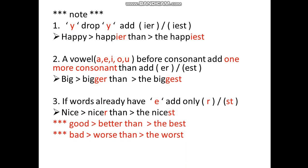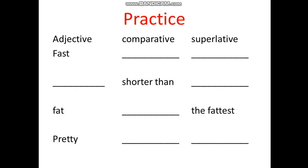Two irregular words to remember: 'good' — comparative 'better than', superlative 'the best'. 'Bad' — comparative 'worse than', superlative 'the worst'. These do not follow the normal rules — you must memorize them. Now let's go to practice. You need to identify the adjective, comparative, and superlative forms for given words.